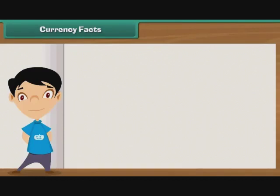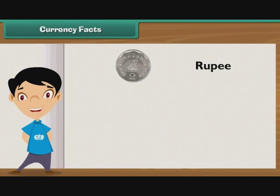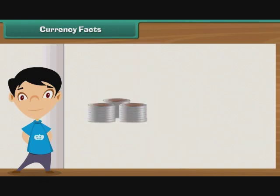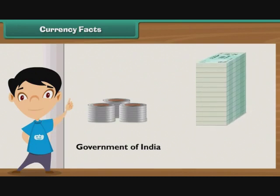Currency facts. The Indian currency is known as the rupee. The word rupee comes from the Sanskrit word rupaya, which denoted the stamped coins used in ancient India. This symbol is associated with the Indian rupee. Indian currency is made up of coins and notes known as banknotes. While the coins are minted by the Government of India, the banknotes are issued by the Reserve Bank of India, RBI.